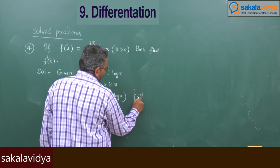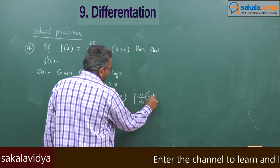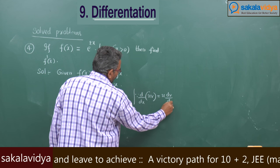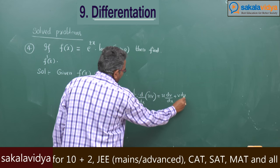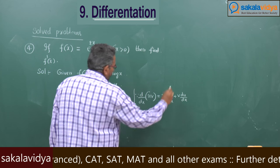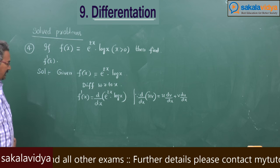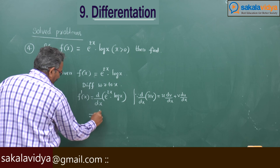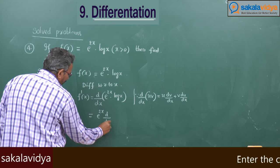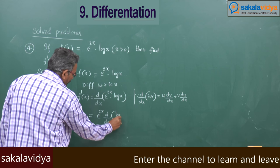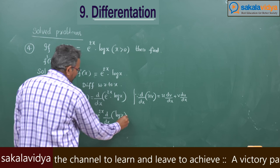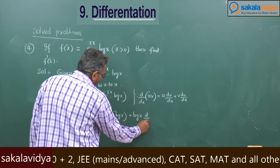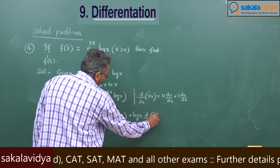We know the product rule formula: d by dx of UV equals U times dV by dx plus V times dU by dx. Applying this, we get e power 2x into d by dx of log x.